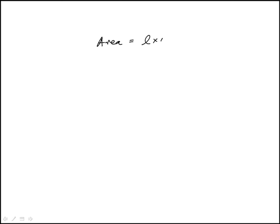We're told that the area of a rectangular field is the product of its length and width. If each dimension of the rectangular field is multiplied by 3, meaning the length is now 3L and the width is 3W, then the area of the enlarged field would be 9 times LW.